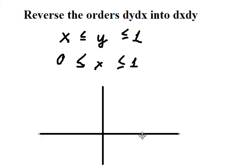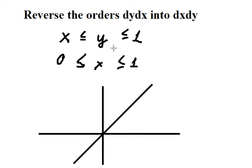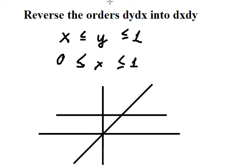Now we need to graph y equals x. The graph should look like this. And y equals 1 — the graph should look like this. We see that y is greater than or equal to x and less than or equal to 1, so the area we need to concentrate on is this region here.